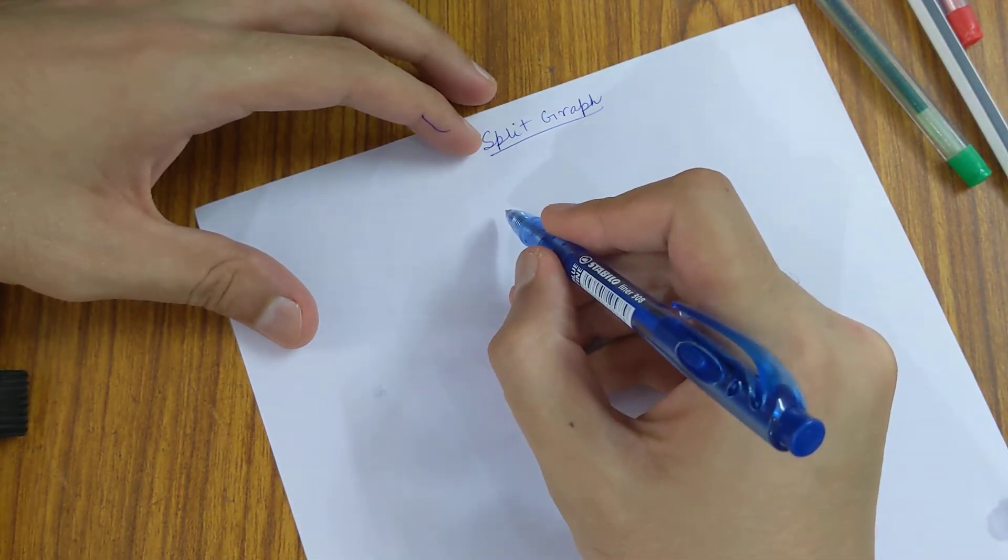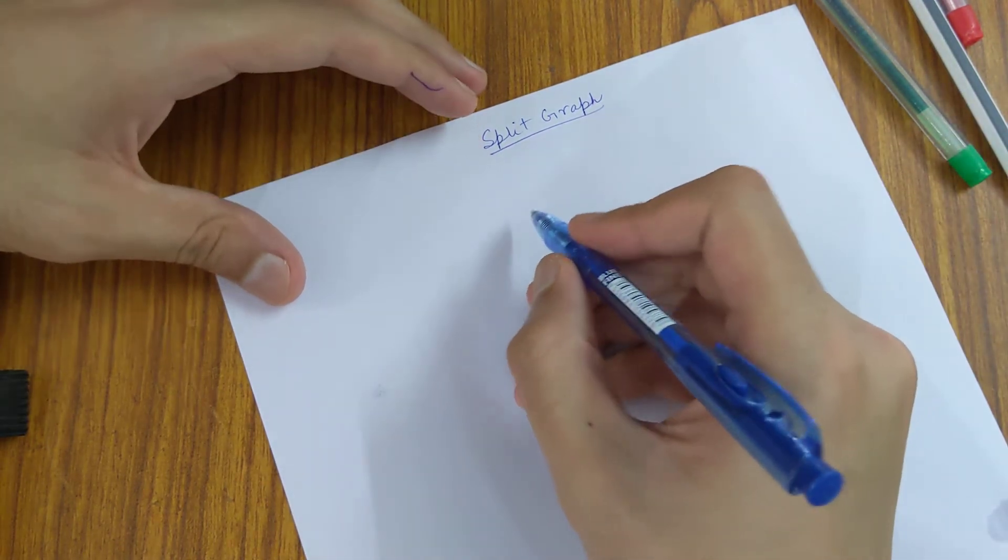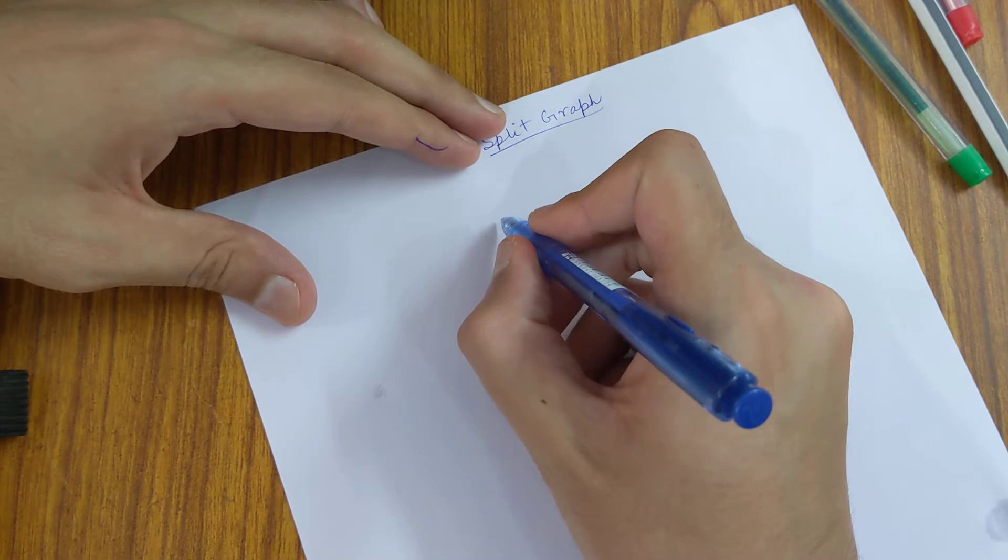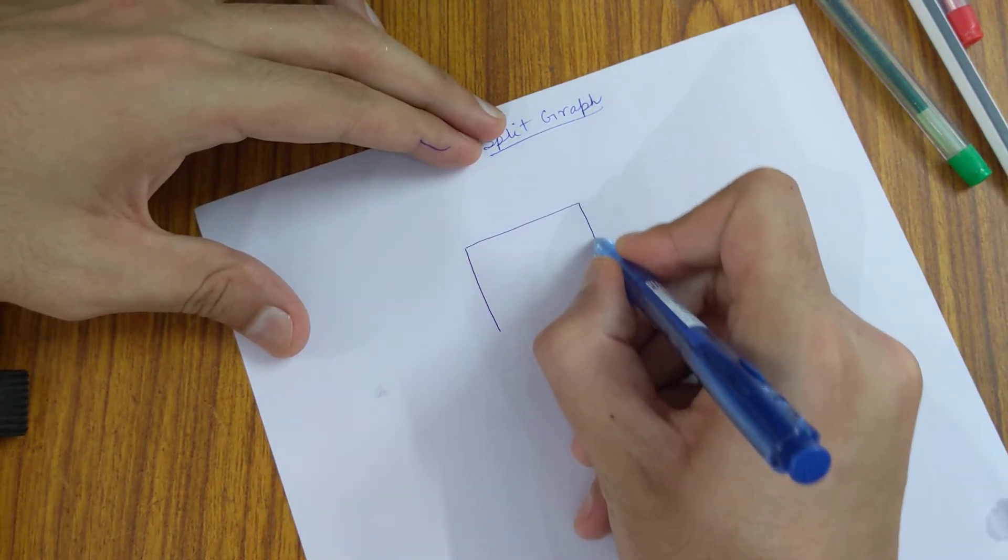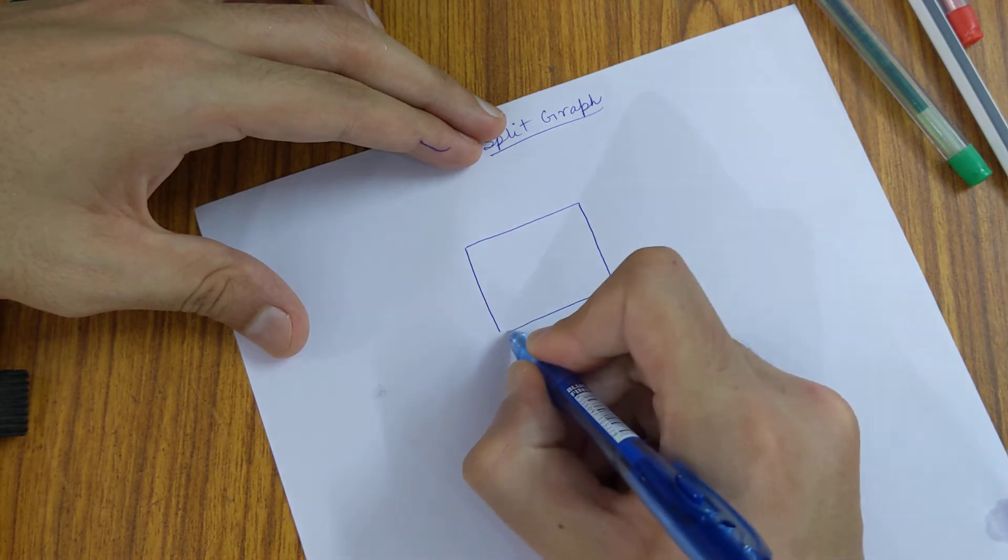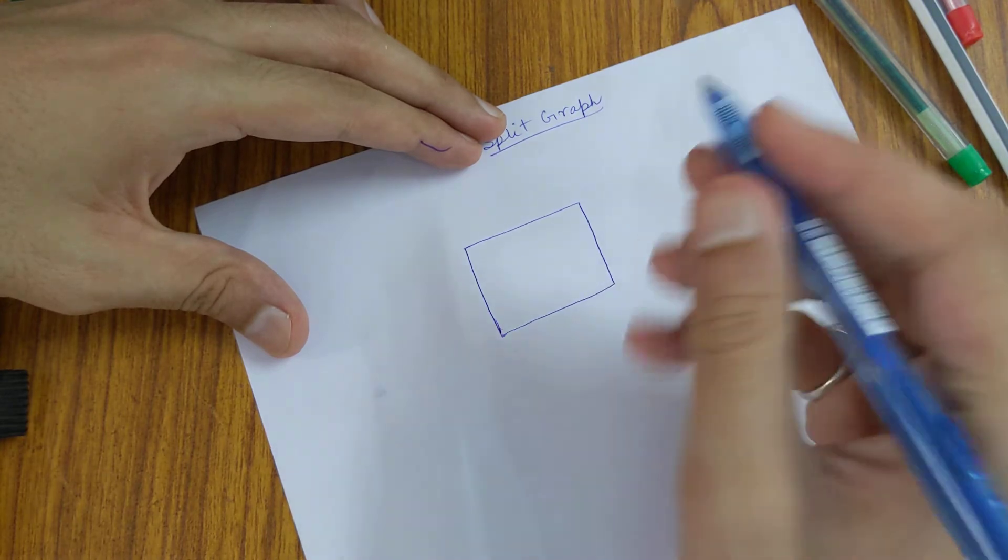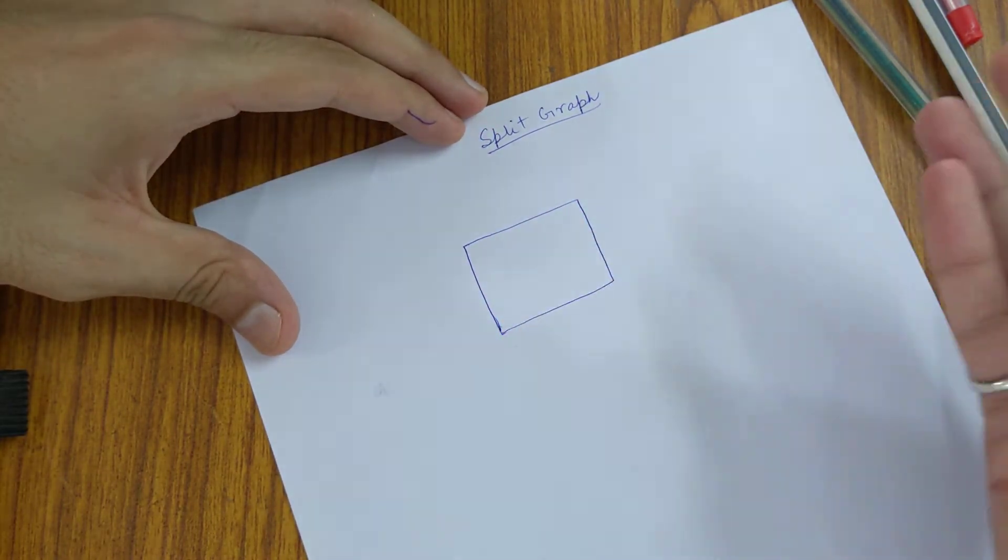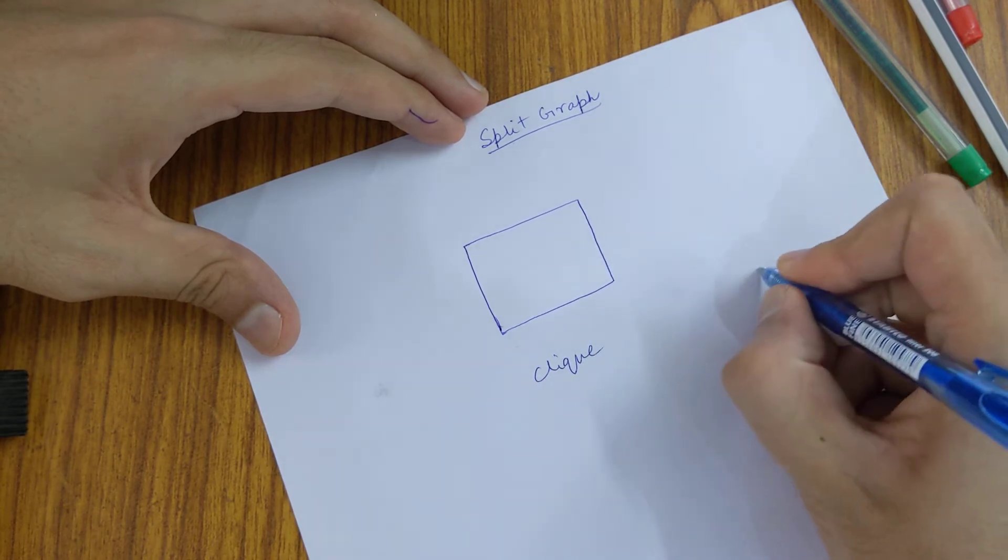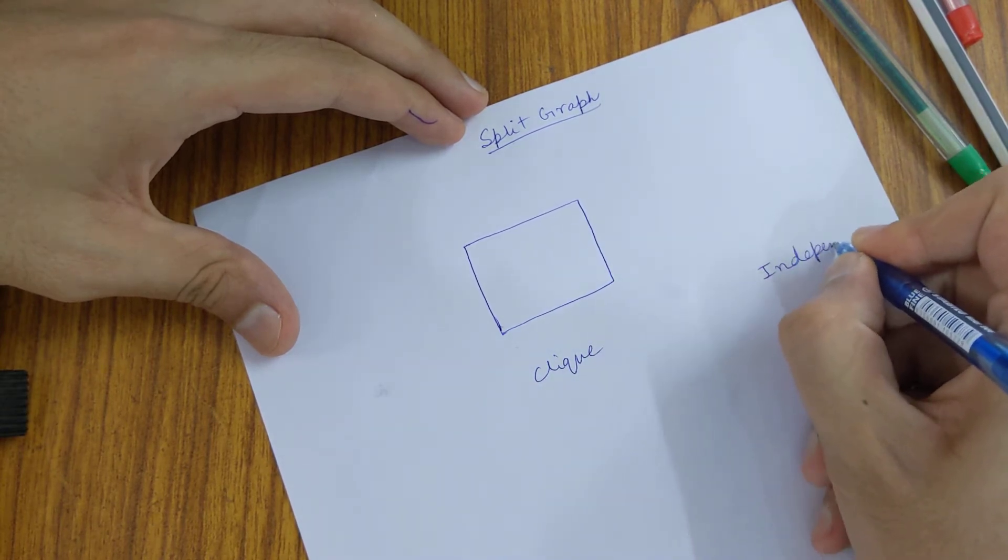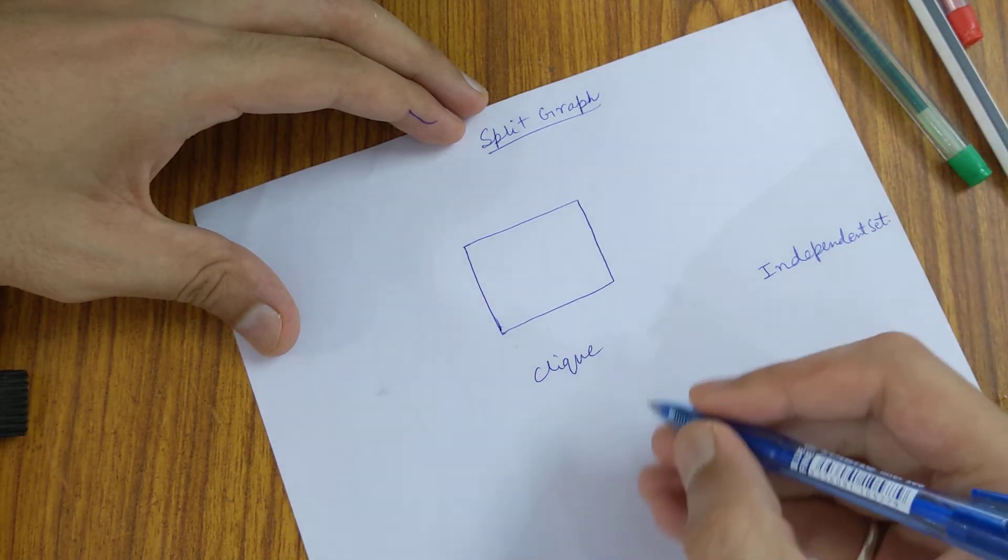I'll give you a quick example here. A clique is a part of a graph, a vertex induced subgraph basically, which forms a complete graph. I have created a separate video explaining what a clique is and what is an independent set. I will provide the links of those videos in the description.